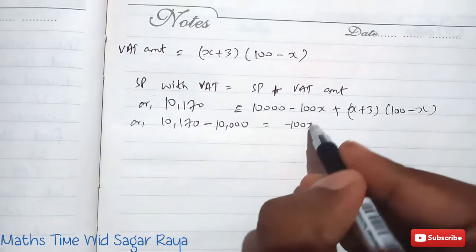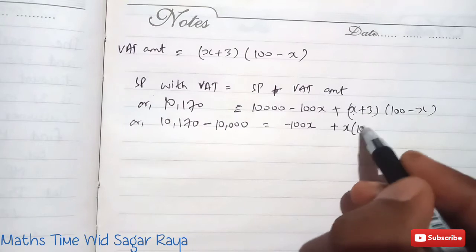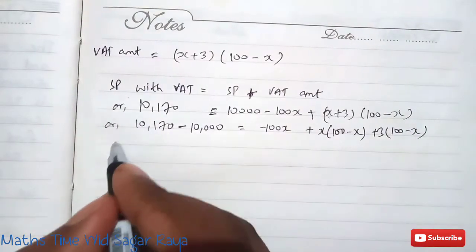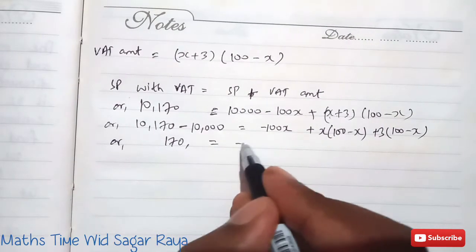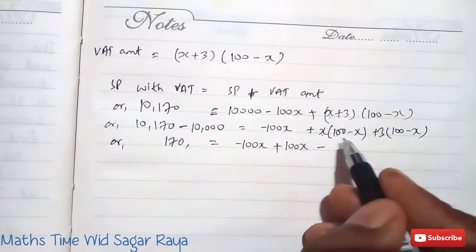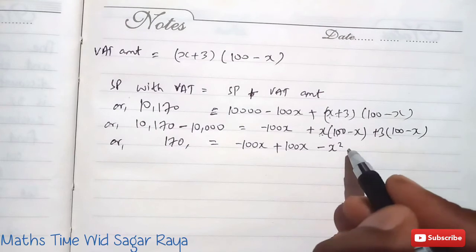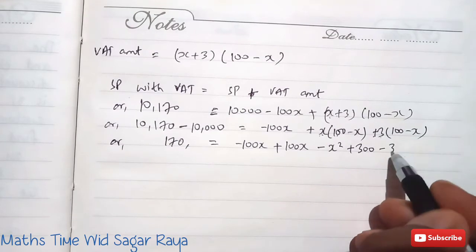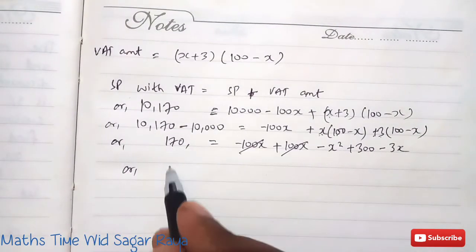Bringing 10,000 to the left side: 170 equals minus 100X plus expanding (X+3)(100 minus X). Expanding: X times 100 gives 100X, X times minus X gives minus X squared, 3 times 100 gives plus 300, and 3 times minus X gives minus 3X. So 170 equals minus 100X plus 100X minus X squared plus 300 minus 3X. The minus 100X and plus 100X cancel.